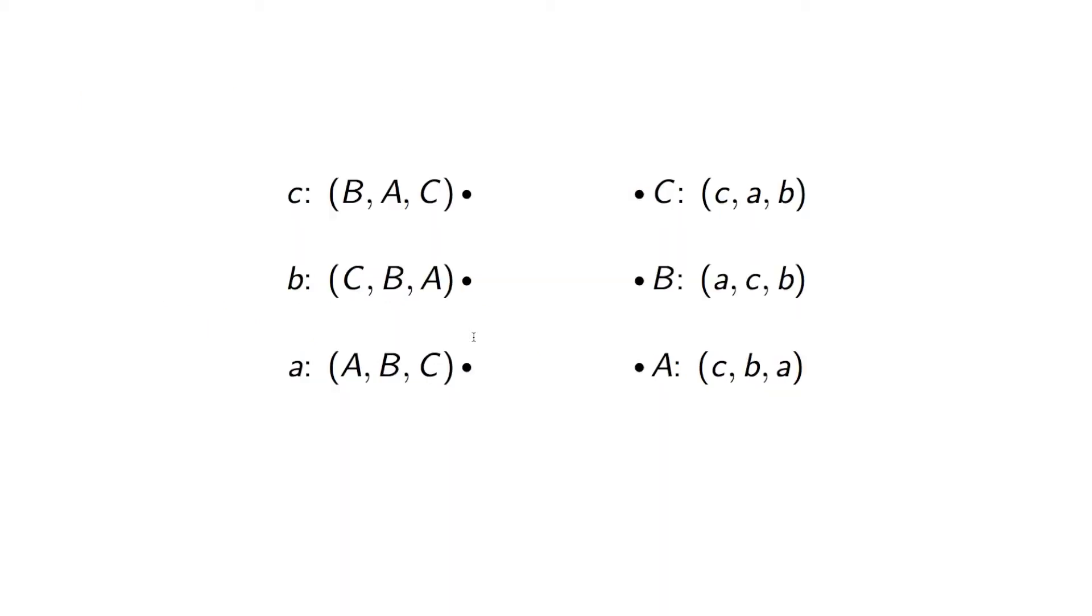We start off by picking a suitor and matching that suitor with the top of their preference list. So, matching little A to big A. We then pick another unmatched suitor, so little B, and we're just going to match little B to the top of their list.